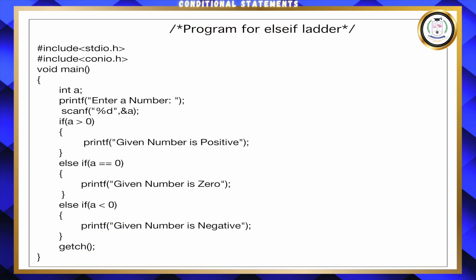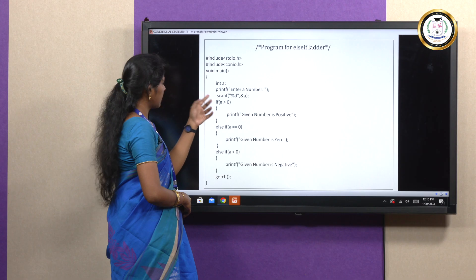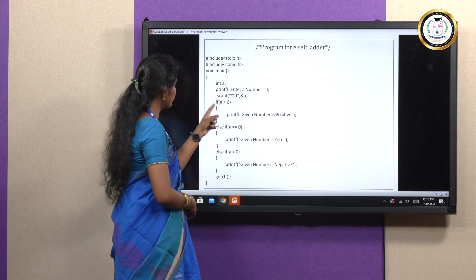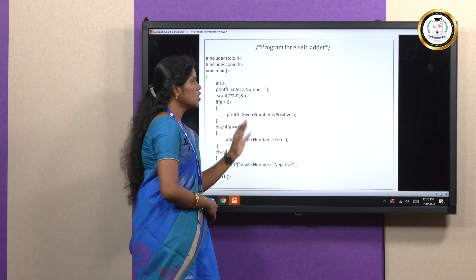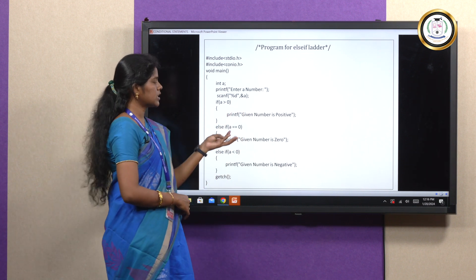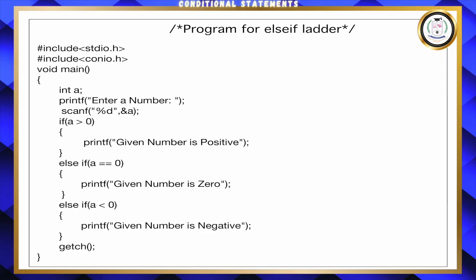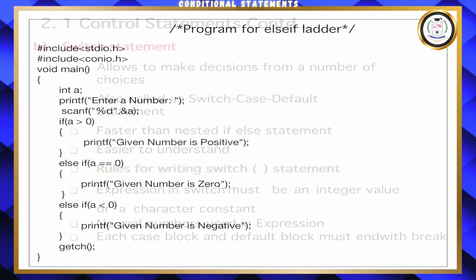This is the simple syntax for the else-if condition. In the example, under the header files and main function, I am declaring an integer variable 'a' and getting a number from the user using printf and scanf. If 'a' is greater than 0, the number is positive. If 'a' equals 0, it is zero. If 'a' is less than 0, it is negative. This is the simple example for the else-if ladder.